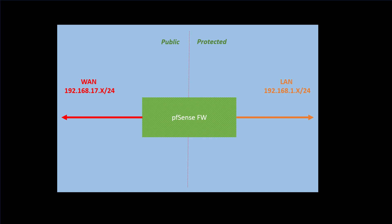Before we begin, let's set up our network configuration. We'll simulate a test environment with a WAN interface on the 192.168.17.x /24 network and a LAN interface on the 192.168.1.x /24 network.